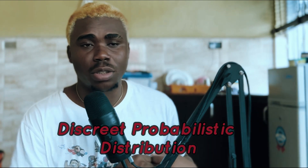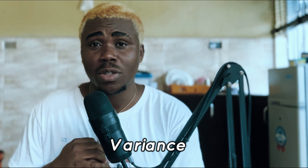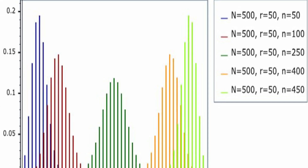Let's talk about the types of probabilistic distribution in statistics, starting with the discrete probabilistic distribution. A discrete probabilistic distribution results from discrete random variables coming together. The mathematical function that defines it is known as a probability mass function, or PMF. For a discrete probabilistic distribution we can get the expected value, variance, and standard deviation. Examples include the Bernoulli, binomial, Poisson, geometric, and hypergeometric distributions.